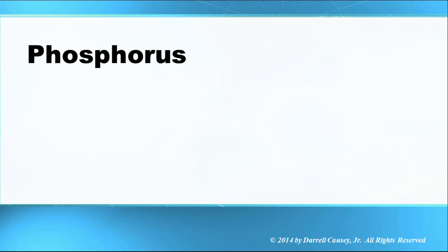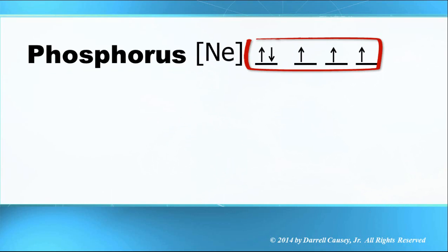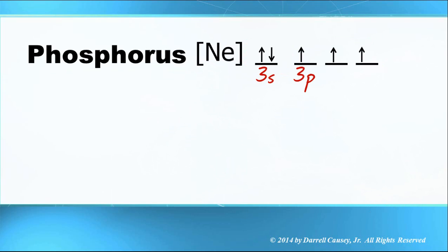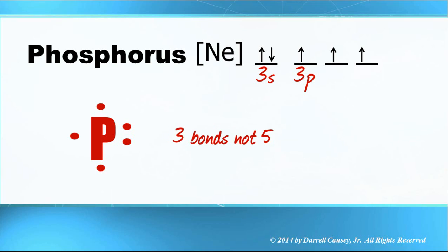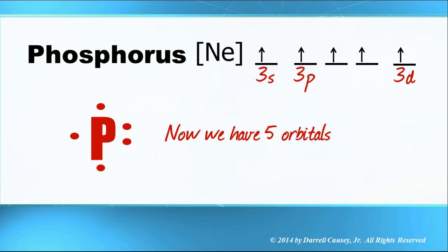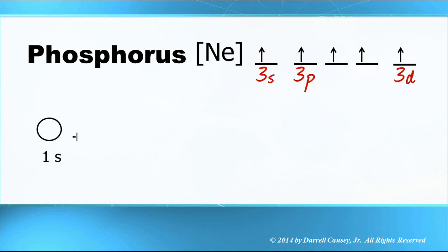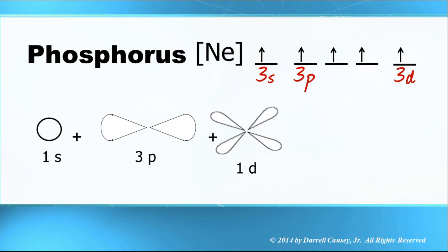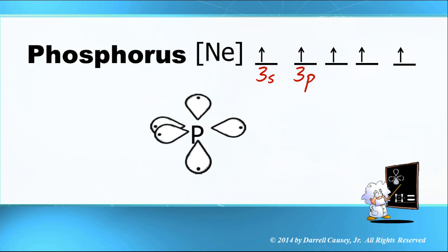And this is how phosphorus works. Phosphorus has five valence electrons but would only produce three bonds normally — three bonds, not five. So how could it possibly make five bonds? We borrow from the d orbitals. One of the s electrons jumps up there, and now we have five orbitals to make five bonds. So one s, three p's, and one d gives us five brand new sp³d orbitals — and that's trigonal bipyramidal.